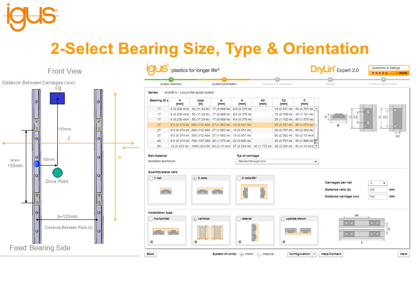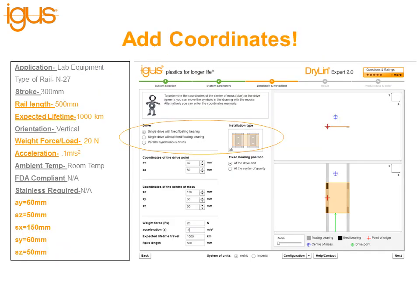Now take all of the dimensions we previously calculated and enter them in. On this page we'll enter the carriages per rail, which is two; the distance between rails as indicated on the print, which is 125 millimeters; and the distance between bearings WX, which is 150 millimeters. We also want to select the type of bearing, the type of carriage, quantity of rails — in this case two — and the installation type, which is vertical.